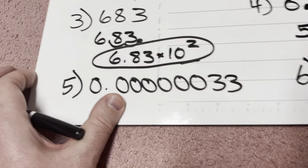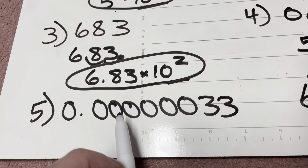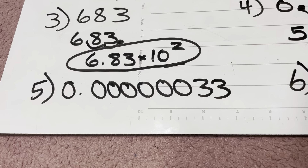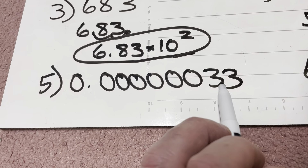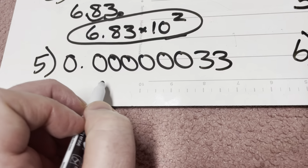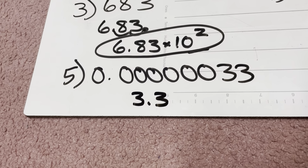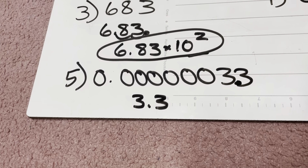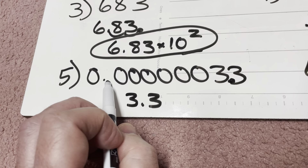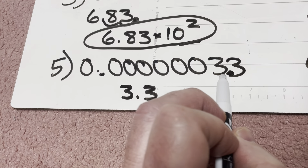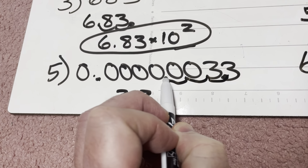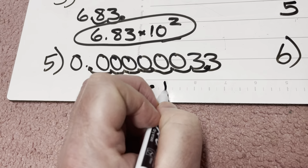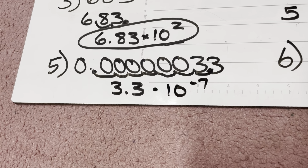This one here — 3,300 hundred-millionths. Once again, equal or greater than 1 but less than 10. That's going to be 3.3, or 3 and 3 tenths. I put the decimal here. How many places do I have to move that to the left to get it back to its original spot? 1, 2, 3, 4, 5, 6, 7. That's going to be 3.3 times 10 to the power of negative 7. Final answer.